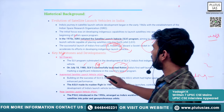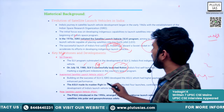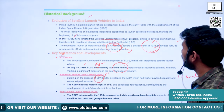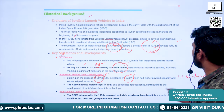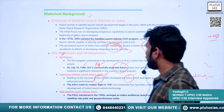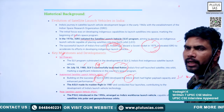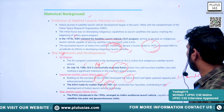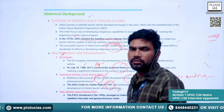After that, India developed the Augmented Satellite Launch Vehicle (ASLV). Building on the success of SLV-3, the ASLV had higher payload capacity and enhanced performance. The ASLV made its maiden flight in 1987 and conducted four launches, contributing to the development of India's launch vehicle capability.